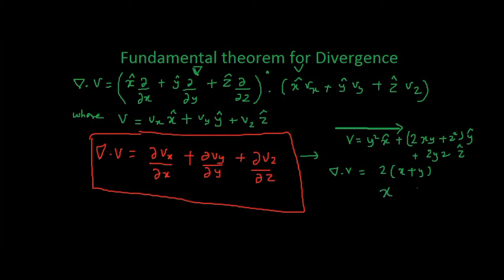Based on the values of x and y, del dot V can be positive or negative. If x is minus 3 and y is 2, then minus 3 plus 2 is minus 1, so this would be minus 2. Or else, if it is plus 3 and minus 2, it would be plus 2. So what do these values mean? What is minus 2 and plus 2?